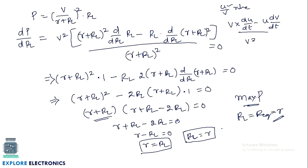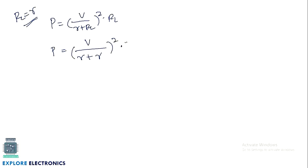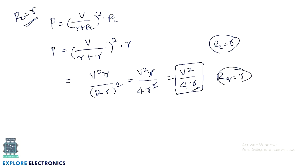This is how we derive the maximum power transfer theorem for a series network. Substituting RL = R into the power expression P = [V/(R + RL)]² · RL gives P = V²·R / (2R)² = V²·R / 4R² = V²/4R. So when RL = R_equivalent, the maximum power delivered to the load is P_max = V²/(4R).